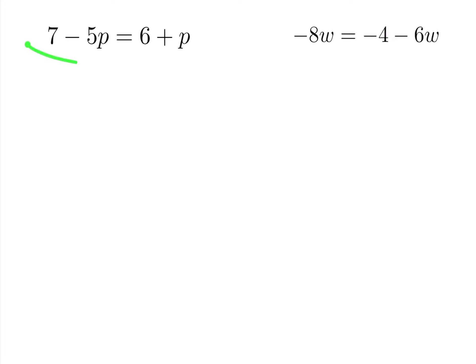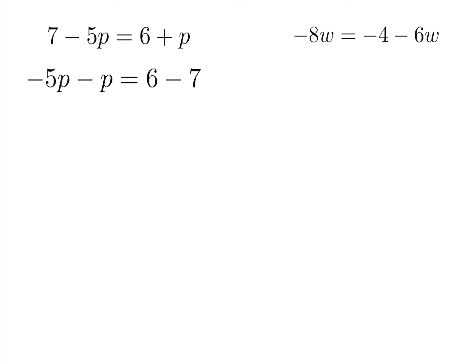Now we have the variable p on both sides. The strategy is to bring all variables to one side and numbers to the other. Subtract 7 from both sides and subtract p from both sides: negative 5p minus p equals 6 minus 7, which gives negative 6p equals negative 1. Dividing across by negative 6 gives p equals 1 sixth.